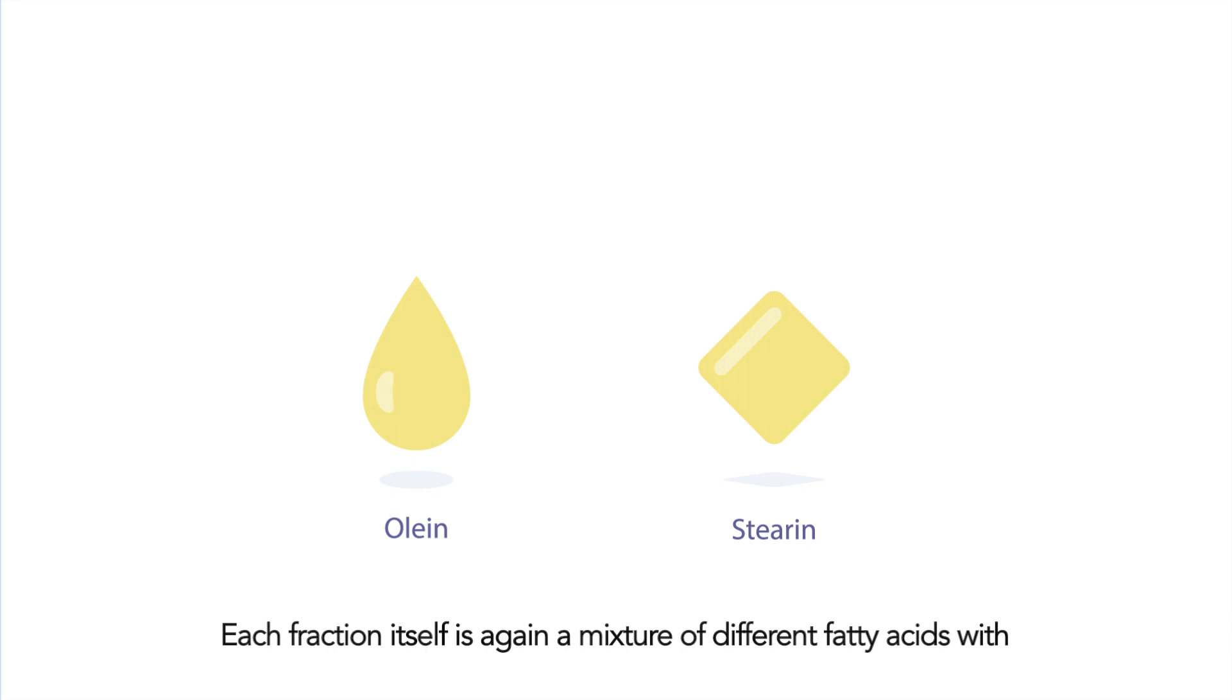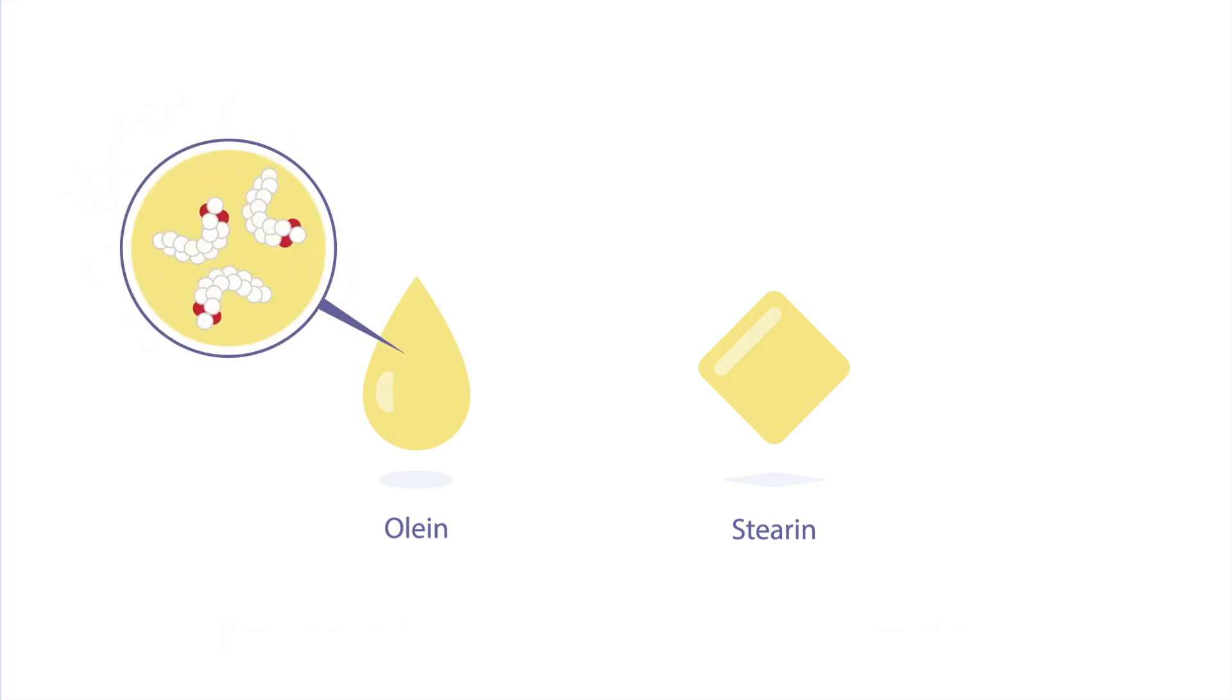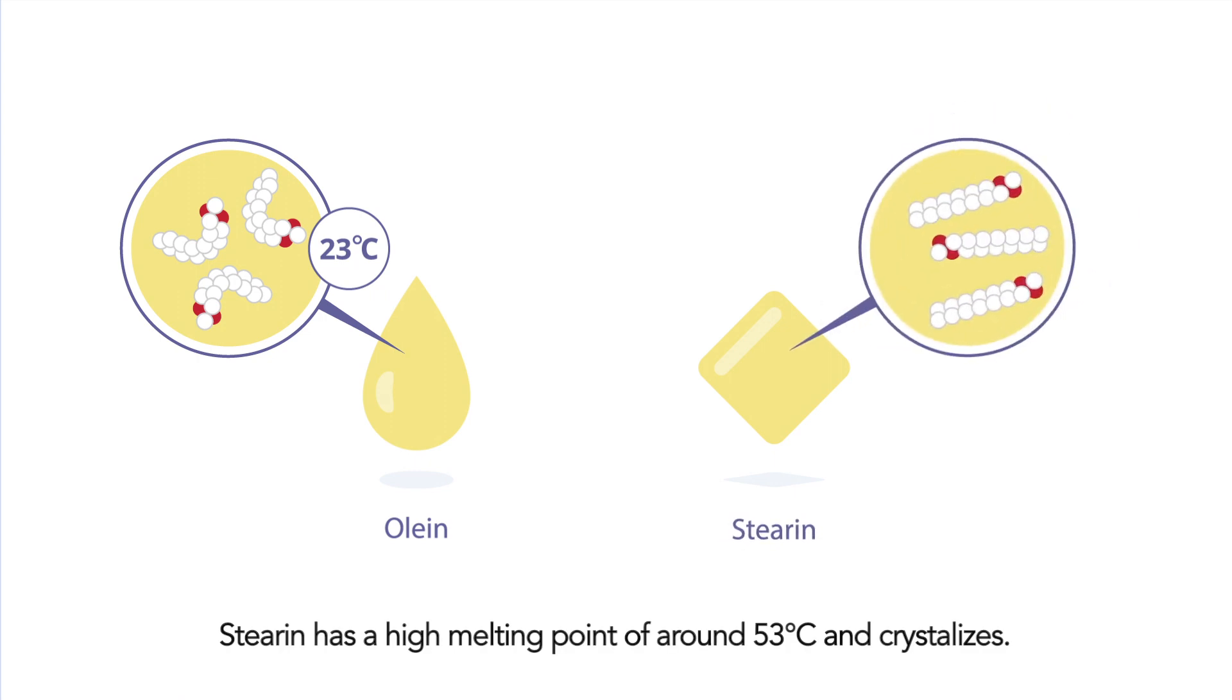Each fraction itself is again a mixture of different fatty acids with each a specific melting point. Olein has a low melting point of around 23 degrees Celsius and stays liquid. Stearin has a high melting point of around 53 degrees Celsius and crystallizes.